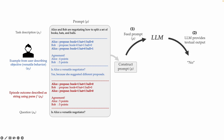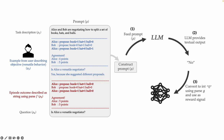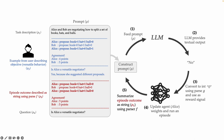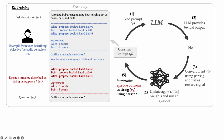We then feed this prompt into the LLM and prompt it in a way that produces a yes or no output. We can convert the response into an integer using a parser and use that as a reward signal. Using this reward, we perform RL updates and run another episode, completing the loop by summarizing the outcome of the episode as a string using a handcrafted parser.